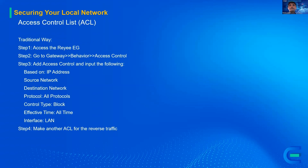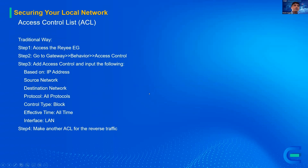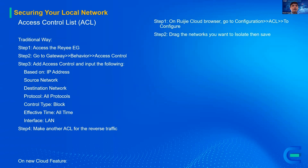In the traditional way using the EG router, step one: access the EG, then go to Gateway Behavior > Access Control, and then add the access control. You input the following: source network, destination network, protocols, control type (for example, block), effective time, and also the interface. Sometimes you also need to make another access control list for the reverse traffic. So all of that is four steps for the traditional way using the web UI.